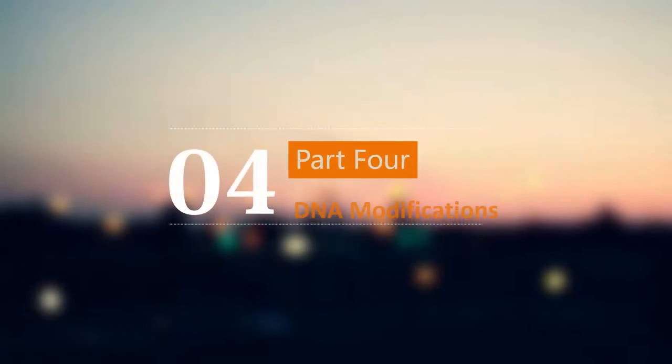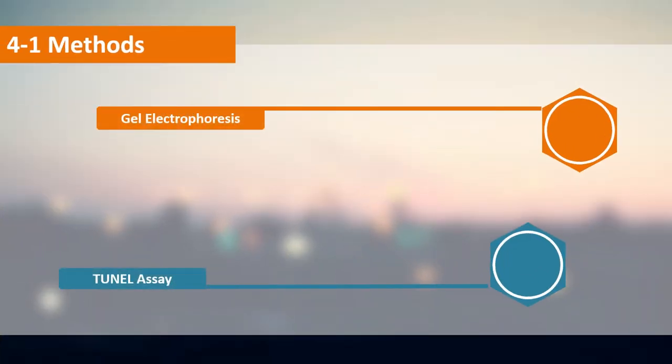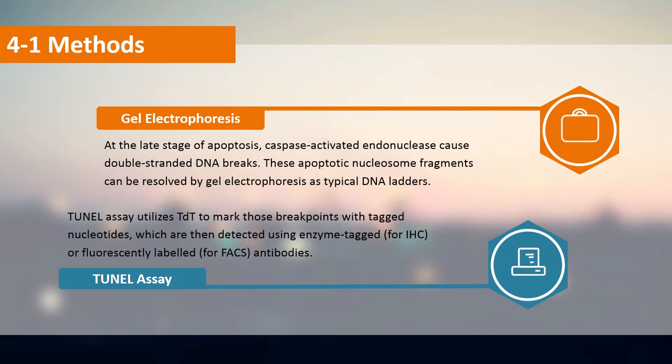In addition to changes in nuclear morphology, loss of DNA integrity also characterizes apoptosis. At the late stage of apoptosis, caspase-activated endonucleases cause double-stranded DNA breaks. These apoptotic nucleosome fragments can be resolved by gel electrophoresis as typical DNA ladders. The TUNEL assay utilizes TDT to mark those breakpoints with tagged nucleotides, which are then detected using enzyme-tagged antibodies for immunohistochemistry or fluorescently labeled antibodies for FACS.